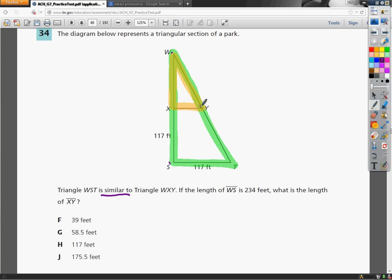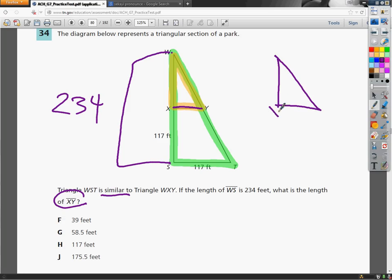If the length of WS is 234, so this whole thing here is 234, they want to know what the length of XY is. So they want to know what this distance is. I'm going to break out the little triangle here for a second.